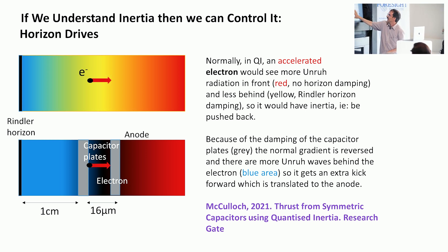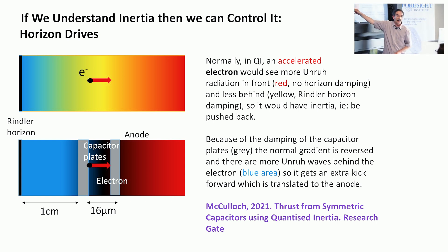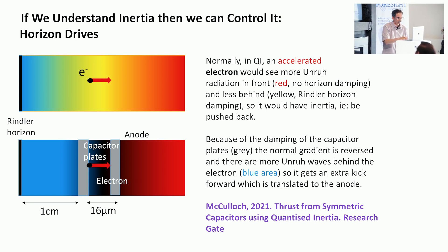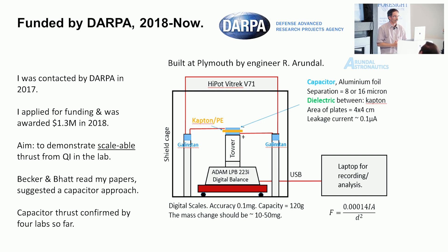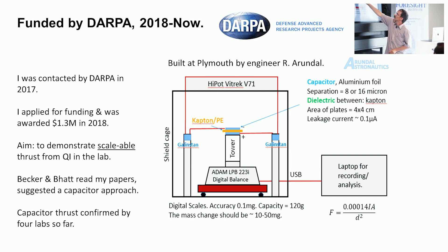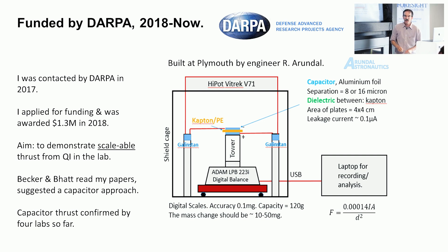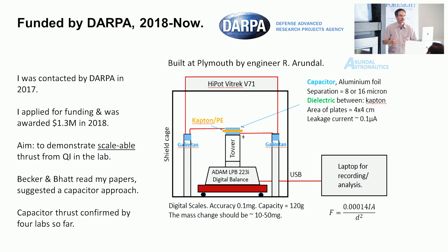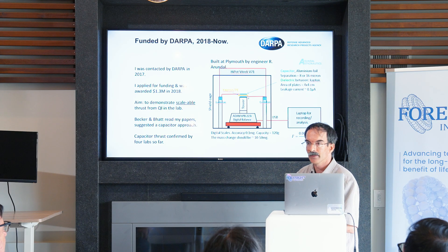I published something about that. The idea of using a capacitor was actually suggested by two researchers called Becker and Batt, who I've been liaising with in recent years. Several labs have been testing for this, and I received a million dollars of funding from DARPA to look at it. The test uses a capacitor — two aluminium foils with a dielectric between them — and we accelerate electrons across. This produces accelerations so great that the Unruh radiation becomes short enough in wavelength to actually interact with the metal of the capacitor.